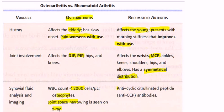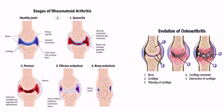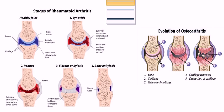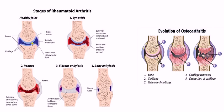Now for the physiology and stages of rheumatoid arthritis. A healthy joint consists of bone, cartilage, fibrous capsule, synovial membrane, and joint cavity with synovial fluid. The first stage is synovitis — inflammation and thickening of the synovial membrane.